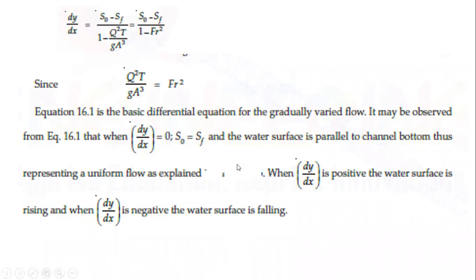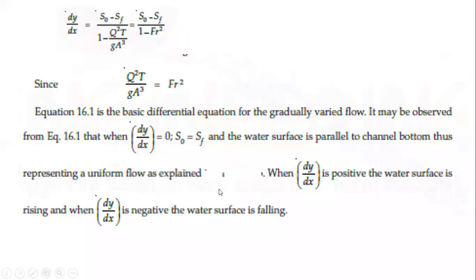When dy/dx is positive, S₀ is greater than Sf and the Froude number Fr < 1 (denominator positive). This means the water surface is rising — a backwater curve condition exists. When dy/dx is negative, the ratio is negative, indicating a falling water surface — a drawdown curve.